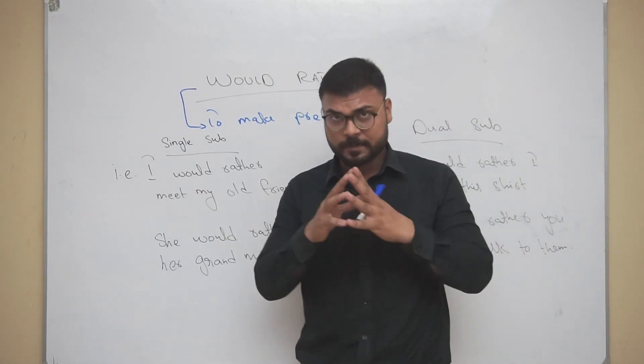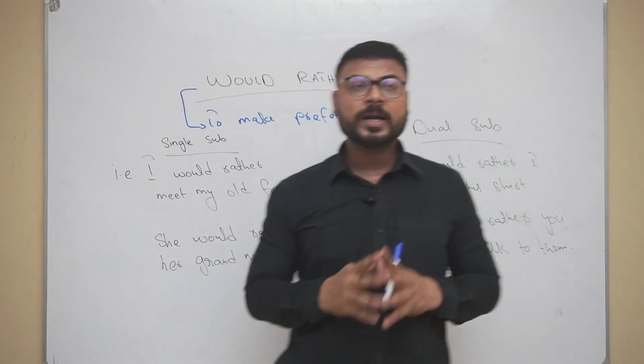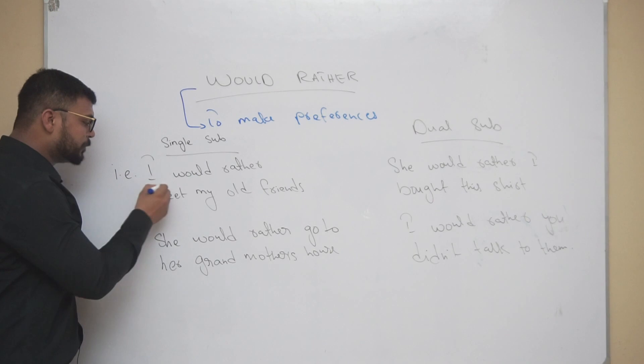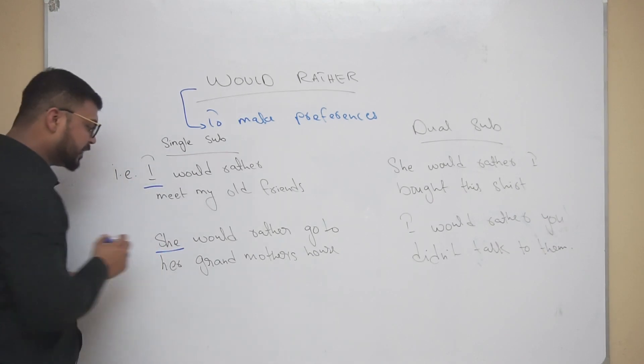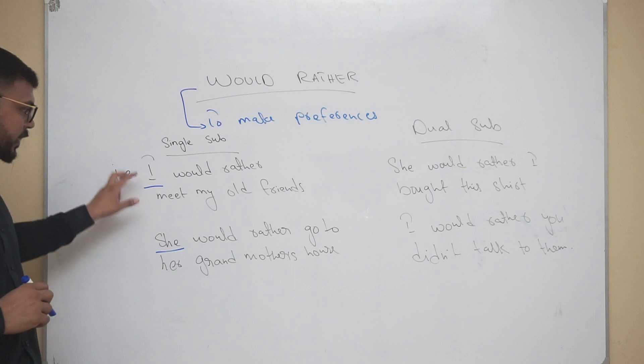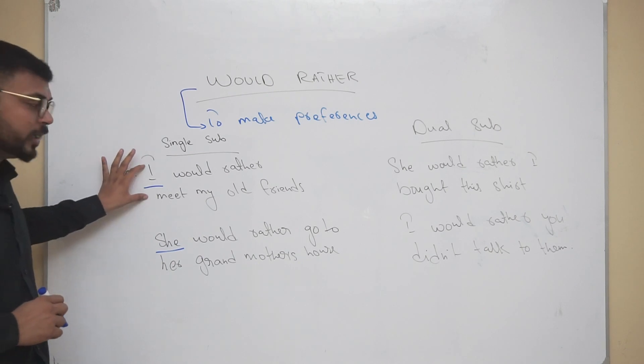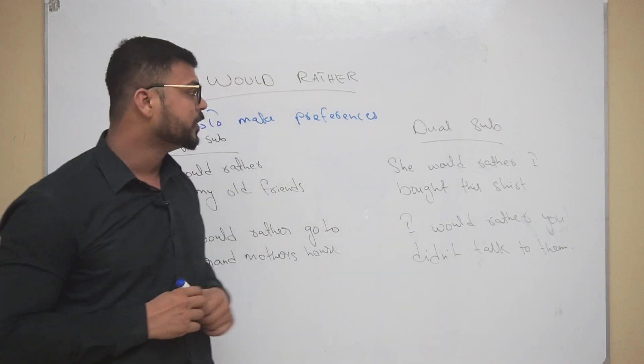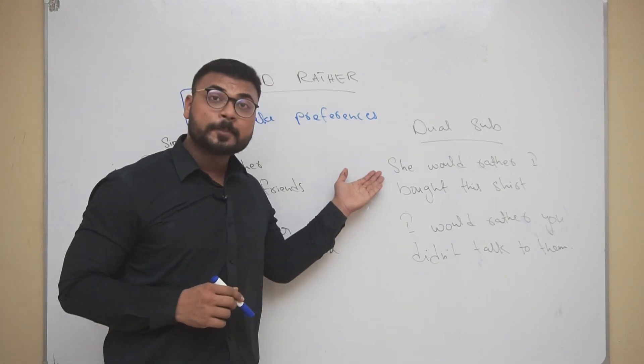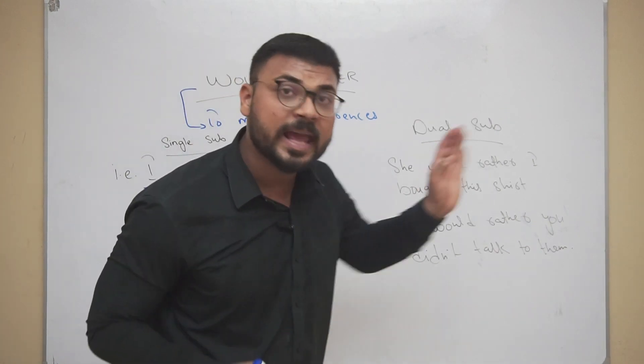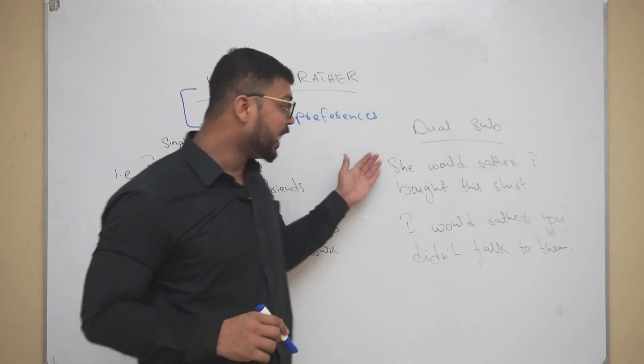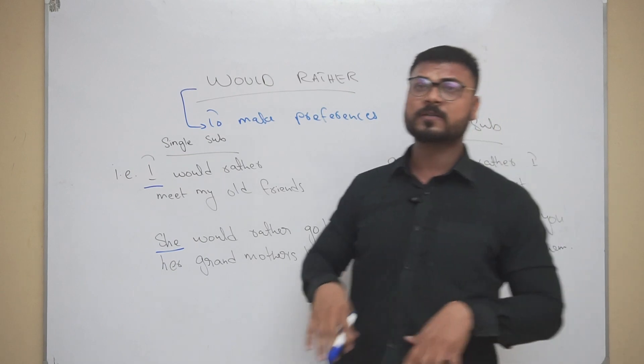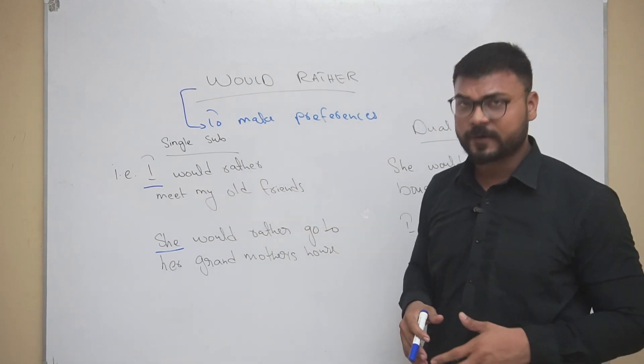You don't actually need to mention 'than' - I'm just doing it for your convenience so you'll be able to understand it in a better way. But when it comes to dual subjects, the confusion occurs. Let me just underline the subjects here for your understanding. With dual subject, we have when we make preference for somebody else.